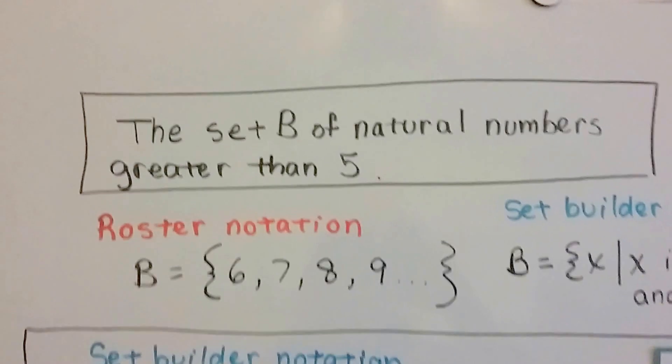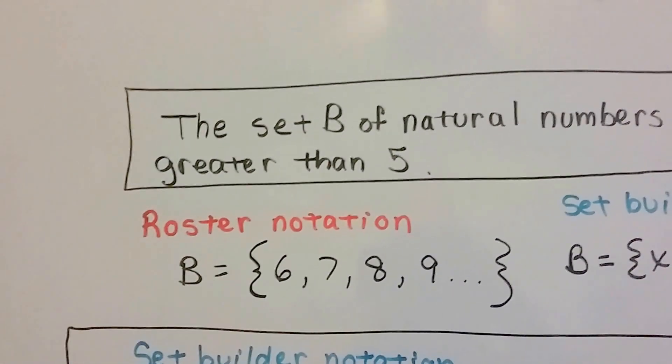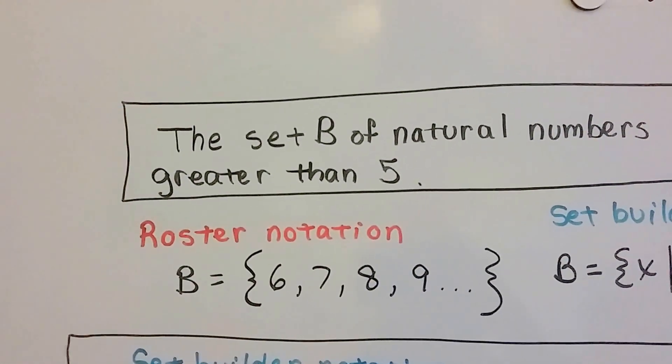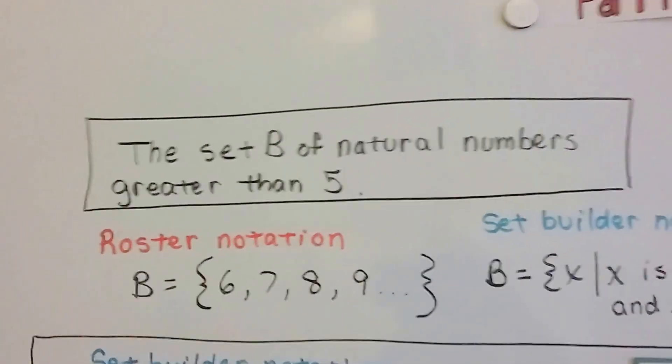So, if we needed to write the set B of natural numbers greater than 5 in Roster Notation, we would just write B equals 6, 7, 8, 9. We would use our dot, dot, dot that we learned about in the last video, our ellipsis, to mean and so on. It goes on to infinity, because those are all greater than 5.